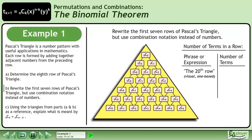The phrase 'the 20th row' implies visual, one-based counting. There are 20 terms in the row.